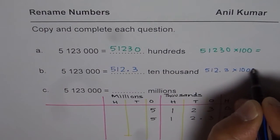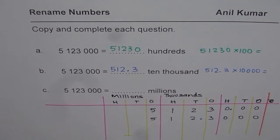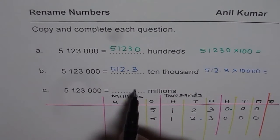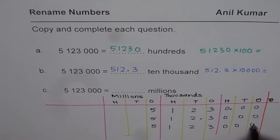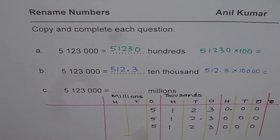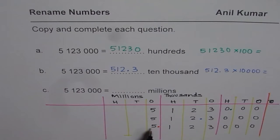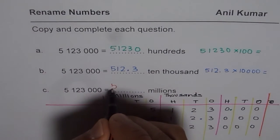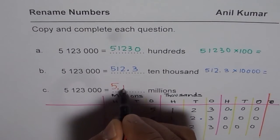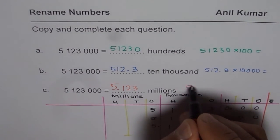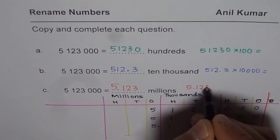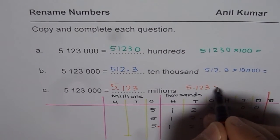The last part is to write the number as millions. The number is five million one hundred and twenty-three thousand. To write it as millions, put the decimal immediately after the millions place and we get 5.123. So the answer is 5.123 millions. Multiplying 5.123 by one million should give you the number back.